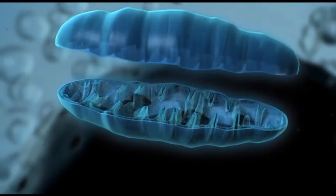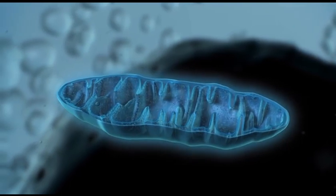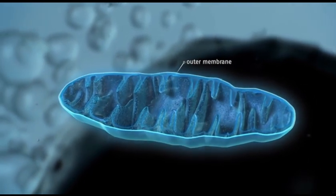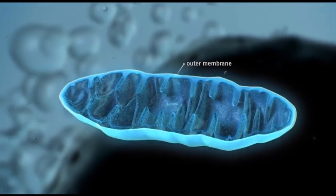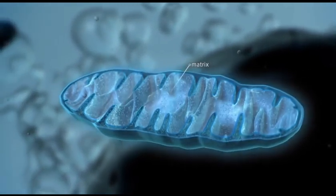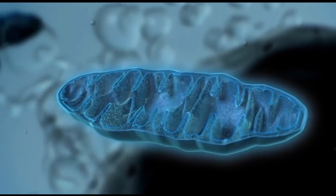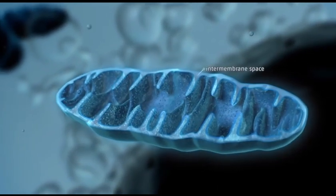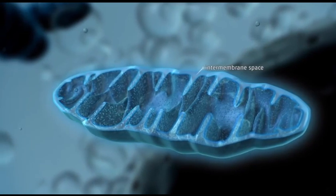Mitochondria consist of two membranes, an outer membrane separating it from the cytosol, and an inner membrane surrounding the so-called matrix. The area between these membranes is called the intermembrane space.